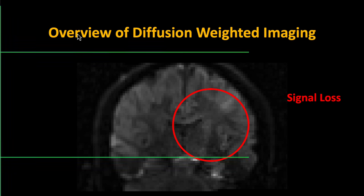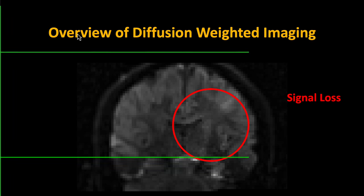If you've ever dissected a brain or seen it on TV, you'd notice it has preferred tear directions — it's like string cheese when you get to the white matter. Anatomically, we know that if we were to release some kind of diffusive material along these white matter tracts, it would tend to go in a certain direction. There may be some random variability in how molecules move, but the overall trend will be in one direction as compared to another.